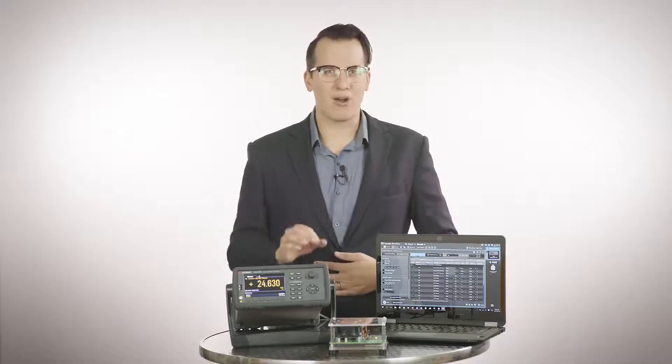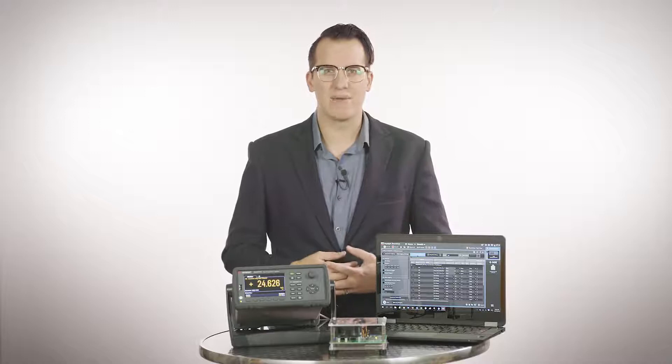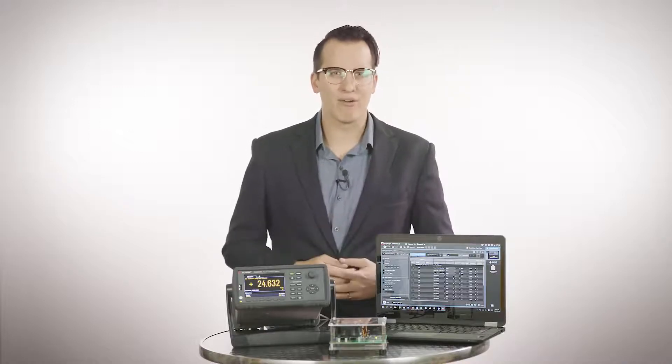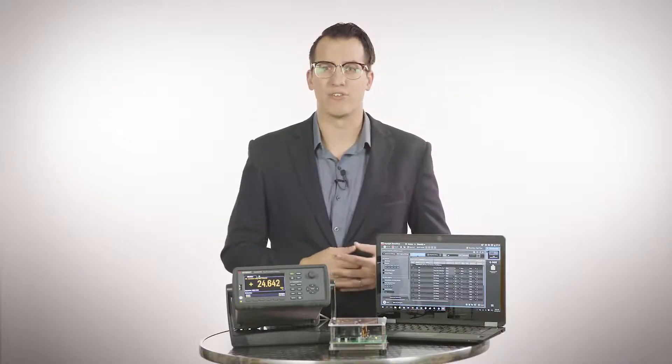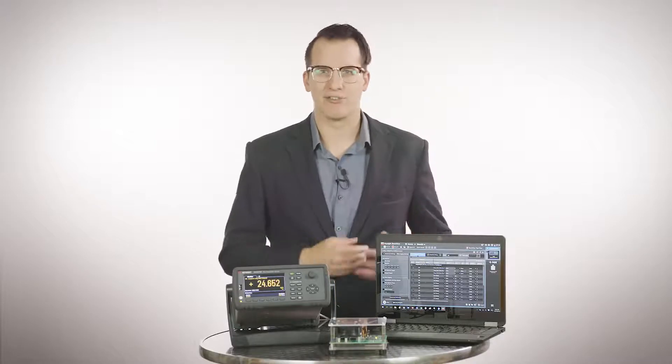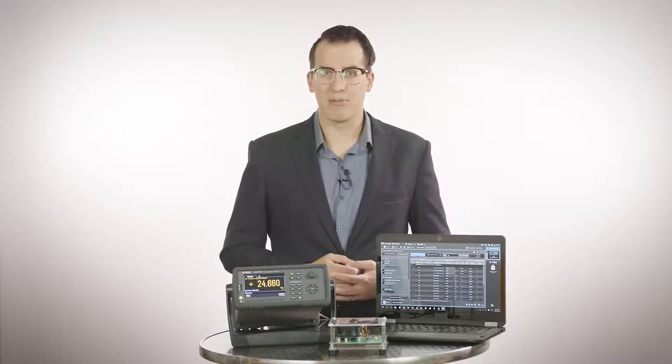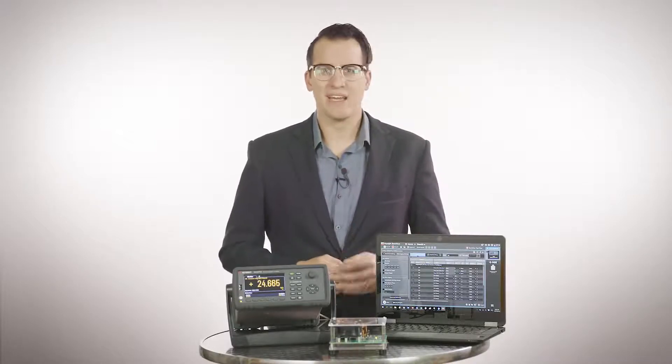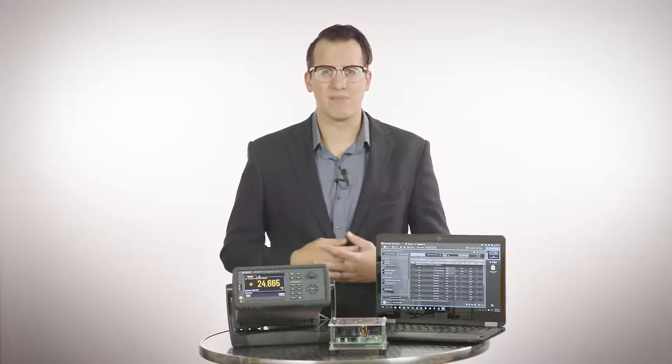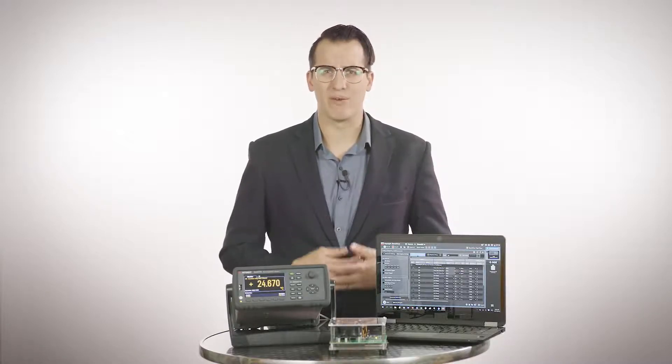It comes with a new auto calibration feature which compensates the internal DMM and the new DAC M907A multifunction module for drifts caused by time and temperature changes. It has 2x deeper memory, up to a hundred thousand readings. And this is non-volatile memory, which means it will still hold data when power is removed.